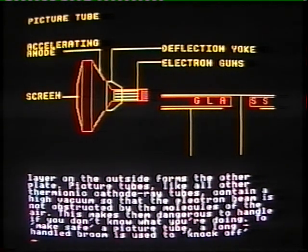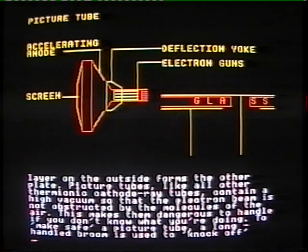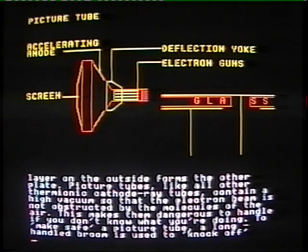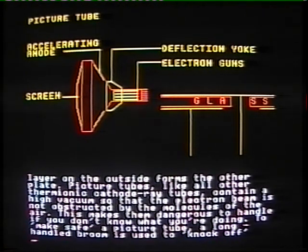Picture tubes, like all other thermionic cathode ray tubes, contain a high vacuum so that the electron beam is not obstructed by the molecules of the air. This makes them dangerous to handle if you don't know what you're doing. To make safe a picture tube, a long-handled broom is used to knock off the electron gun, leaving a hole big enough for air to enter without causing implosion and subsequent explosion. Picture tubes are perfectly safe during operation, however, because of a feature known as integral implosion protection.